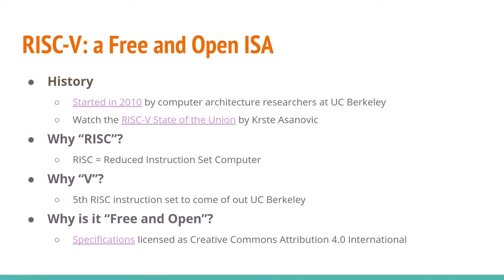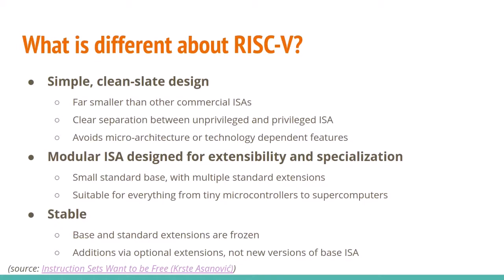RISC-V started about 10 years ago at UC Berkeley, led by Krsta Asanovic. He gives a talk called the RISC-V State of the Union a couple times a year. RISC stands for Reduced Instruction Set Computer — a concept from the early 1980s that has become quite dominant; ARM, for example, is a RISC instruction set. The V stands for five because this is the fifth instruction set from UC Berkeley. The RISC-V specification is licensed under the Creative Commons Attribution License.